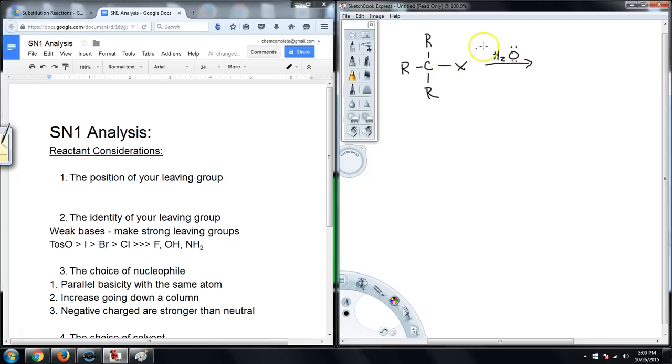And here's what would happen. We've already said this cannot come in at the same time the leaving group is leaving because there's too much steric hindrance. If we were talking about an SN2 type reaction, because this is tertiary, this X, this leaving group. So what's going to have to happen is the leaving group is going to have to leave without the assistance from the nucleophile.